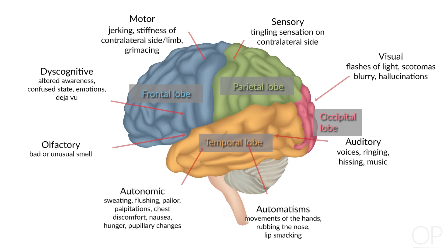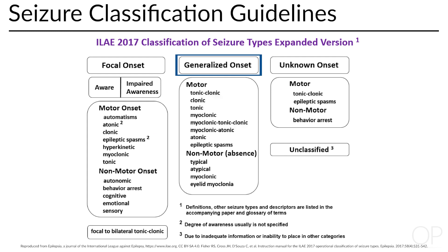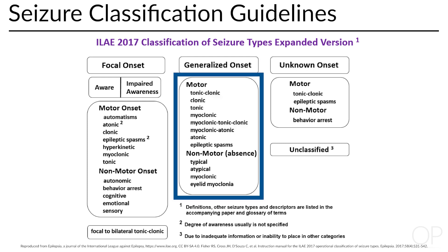Focal seizures have signs and symptoms that reflect the part of the brain which is involved. The final feature is whether the focal seizure evolves into a bilateral tonic-clonic seizure. A seizure which is generalized in onset involves both the right and left hemisphere at once. Similarly to focal seizures, generalized seizures are classified according to motor or non-motor manifestations. Motor manifestations can include tonic-clonic, clonic, tonic, or atonic. Non-motor generalized seizures mostly refer to absence seizures.